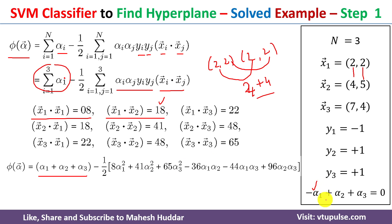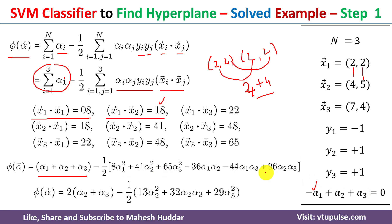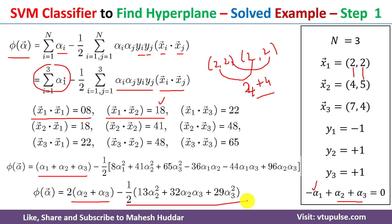Now we apply the constraint. From Σαᵢyᵢ = 0, we get −α1 + α2 + α3 = 0, so α1 = α2 + α3. Substituting this into the equation wherever α1 appears — α1 is replaced by (α2 + α3), so (α2 + α3) + α2 + α3 = 2α2 + 2α3 — and similarly throughout the rest of the equation.